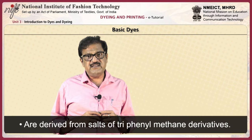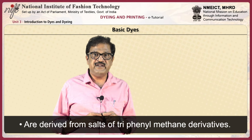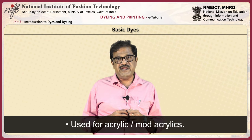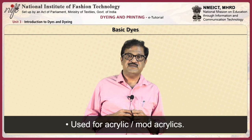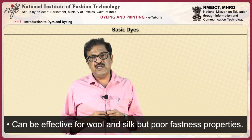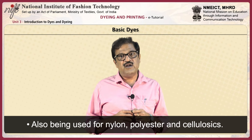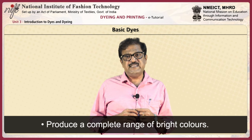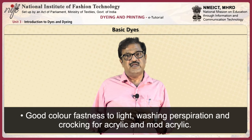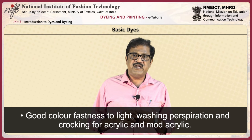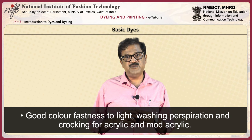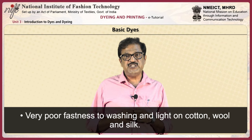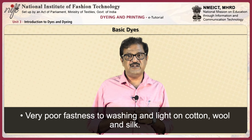Basic dyes: basic dyes are derived from salts of tri-phenyl methane derivatives. They are water-soluble and contain a cationic group. Basic dyes are mainly used for acrylic and mod-acrylic fibers. They can be effective for wool and silk but have poor fastness properties on those fibers. Also used for nylon, polyester, and cellulosic materials. Basic dyes produce a complete range of bright colors. They have good color fastness to light, washing, perspiration, and crocking for acrylic and mod-acrylic fibers, but very poor fastness to washing and light on cotton, wool, and silk materials.